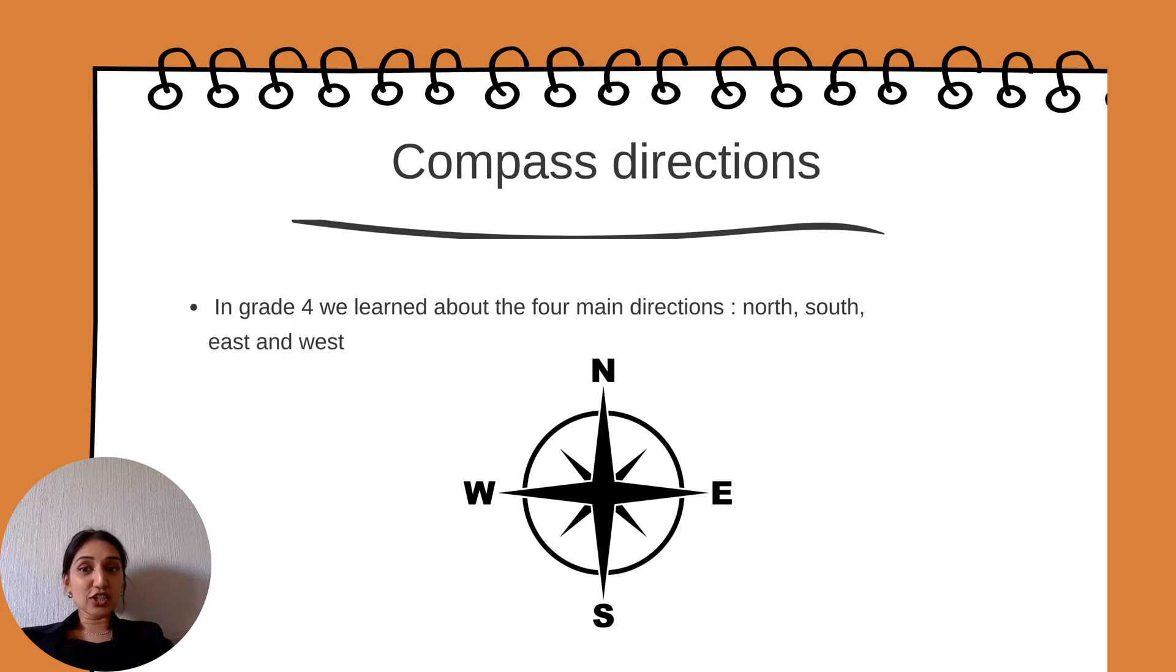Compass directions. In Grade 4, we learnt about the 4 main directions: North, south, east and west.